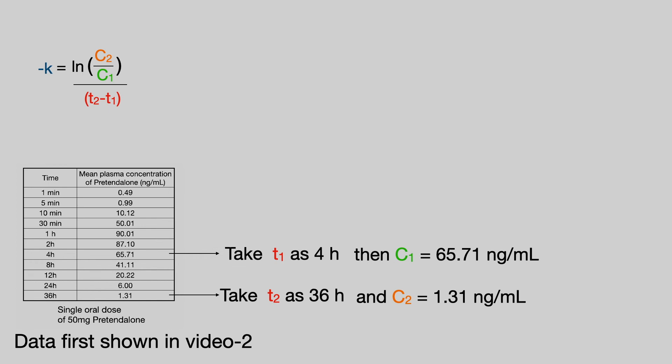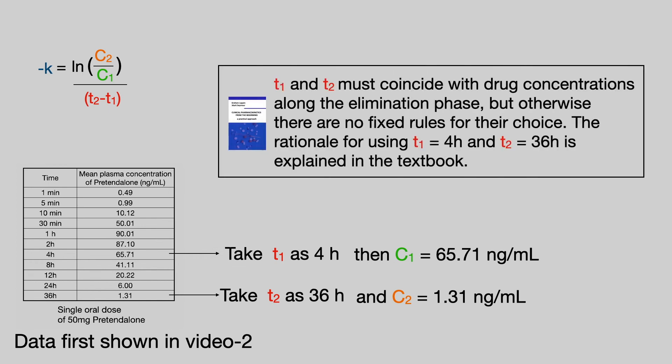Why did I choose this particular time point? Well the only rule is that they have to be along the elimination phase. That is the exponential portion of the semi-log plot. But otherwise there aren't really any other fixed rules.